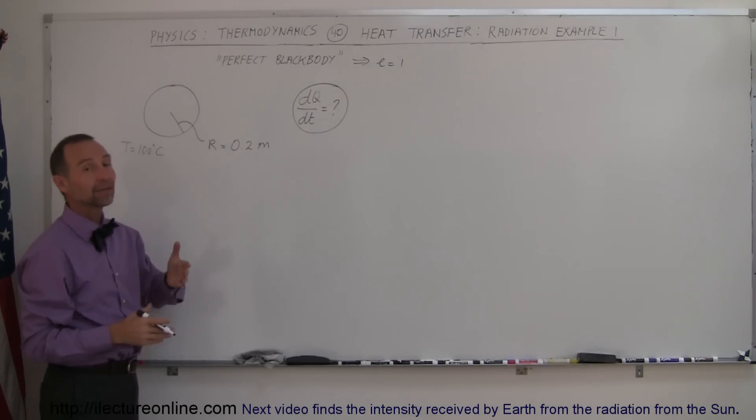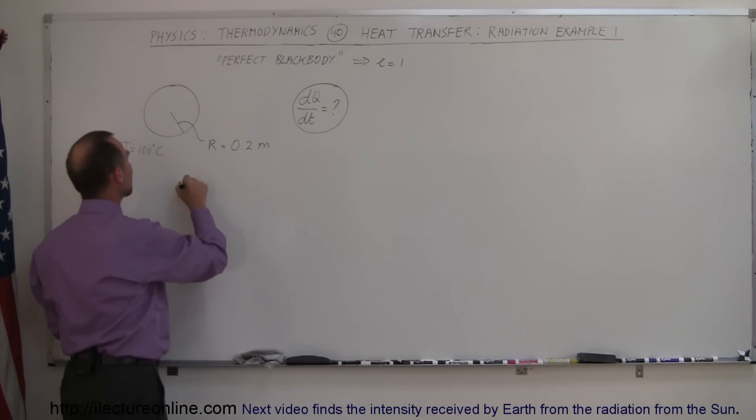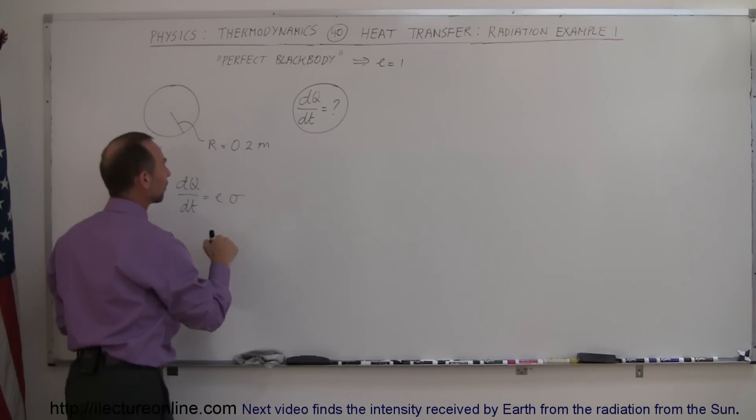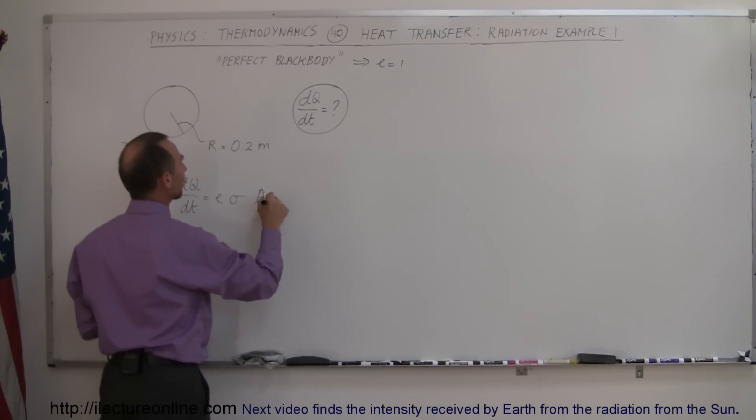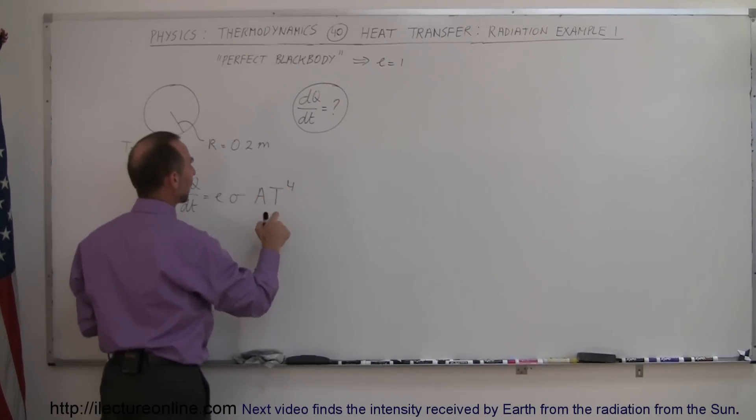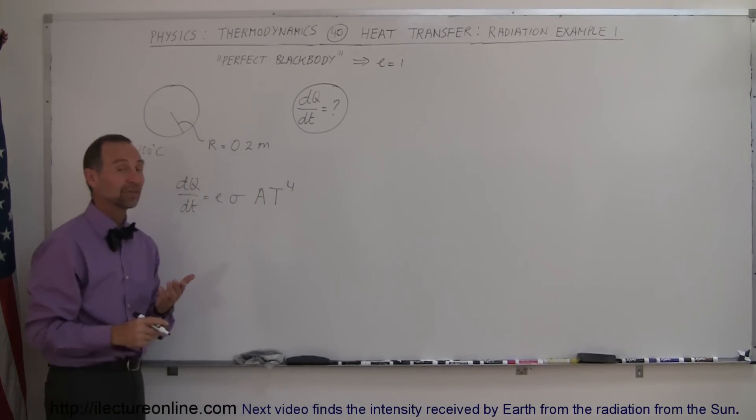The equation to calculate the amount of energy radiated dQ/dt is equal to the emissivity times the constant of proportionality times the area times the temperature to the fourth power. Remember that the temperature must be expressed in terms of Kelvin.